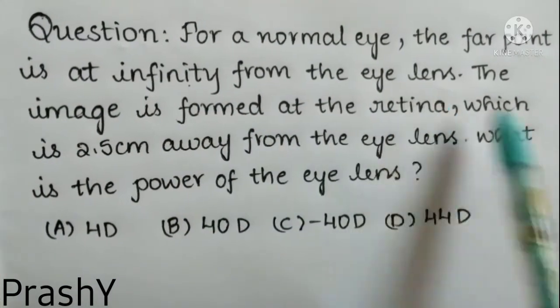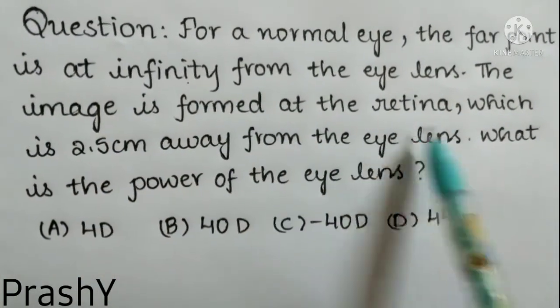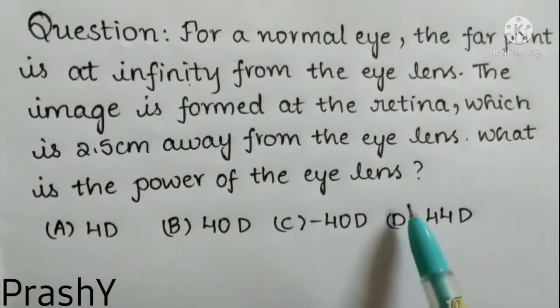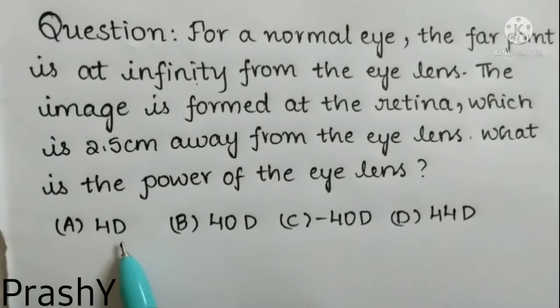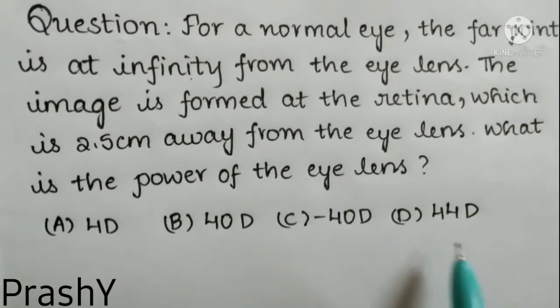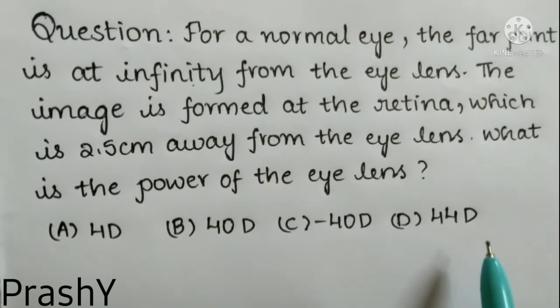The image is formed at retina which is 2.5 centimeter away from the eye lens. What is the power of the eye lens? Option A: 4D, Option B: 40D, Option C: -40D, and Option D: 44D.